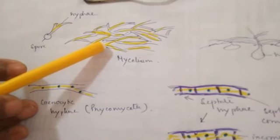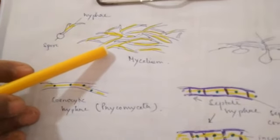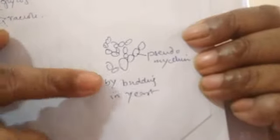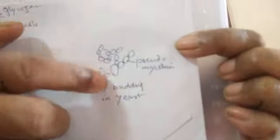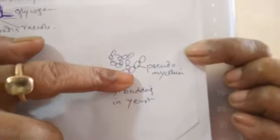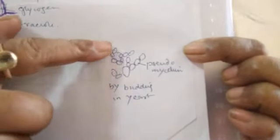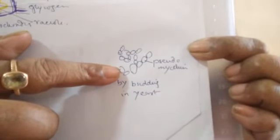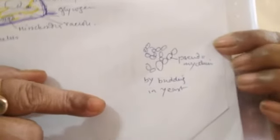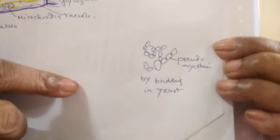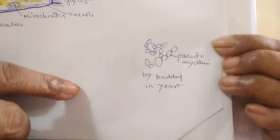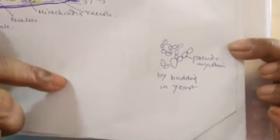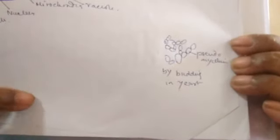One exception is yeast — Saccharomyces cerevisiae. Yeast is unicellular, and these unicellular structures form a chain of cells by budding. This chain of cells appears like mycelium, but it is not true mycelium — it is called pseudomycelium. There is also a deep controversy about whether yeast belongs within fungi or not, because all unicellular eukaryotes are under Kingdom Protista. So whether Saccharomyces belongs under fungi or Protista is still a question.